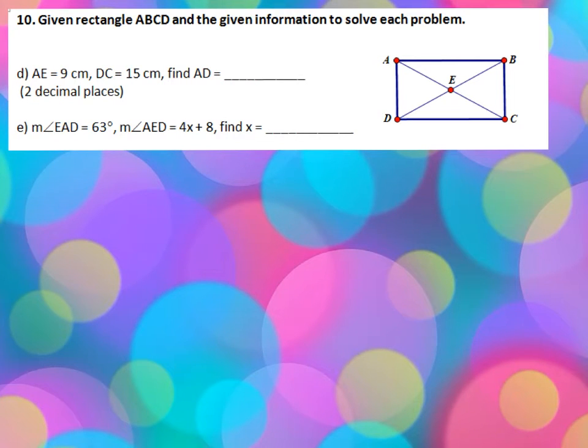Alright, let's take a look at the first one. This one's a nice little Pythagorean relationship. They tell us that that's 9, which makes this 9. Diagonals bisect each other. It tells me that this is 15, and they want me to find this.